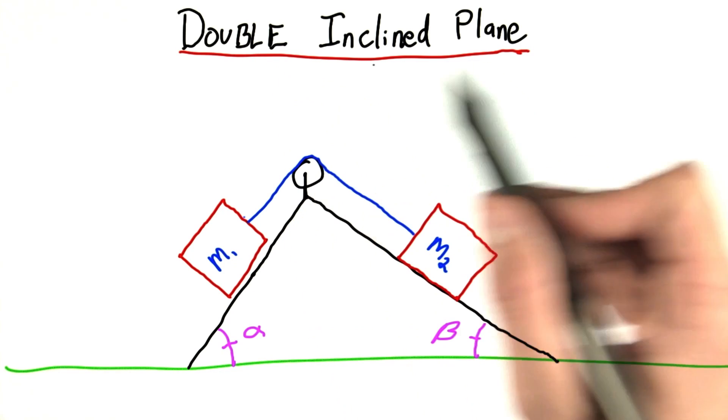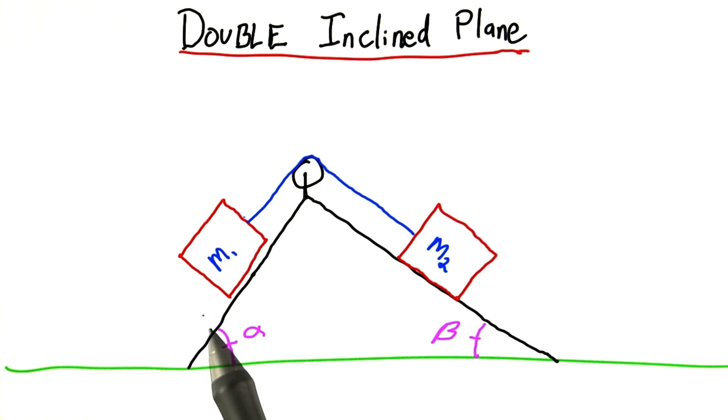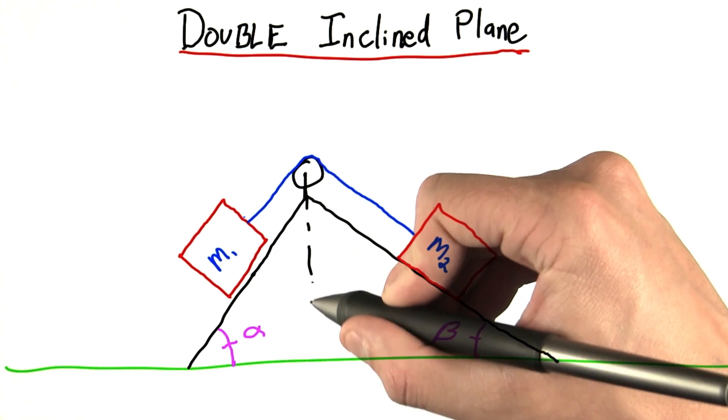This question is about the double inclined plane. And what we have here is a pretty intimidating looking setup. We have what we could view as two inclined planes.